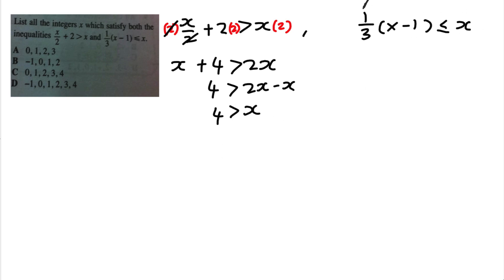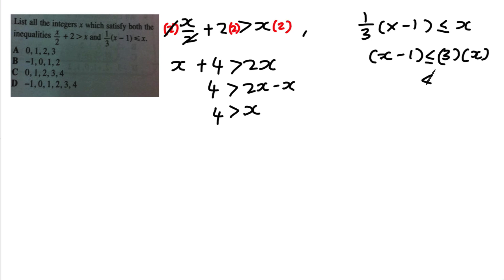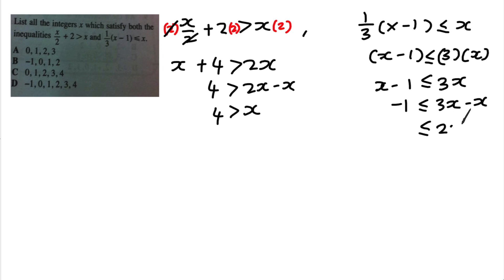For the second inequality, I move the 1/3 to the other side — dividing by 1/3 means multiplying by 3. So I get x − 1 > 3 × ... wait, actually I get 3x on one side and x − 1 on the other. Moving x to the other side gives 2x > −1, so x > −1/2.